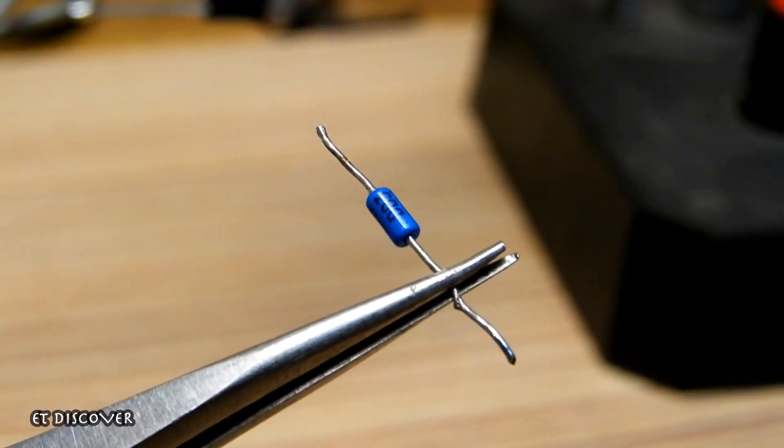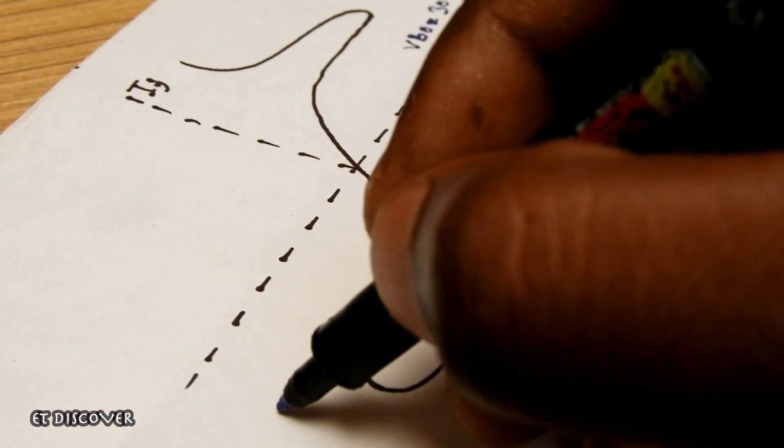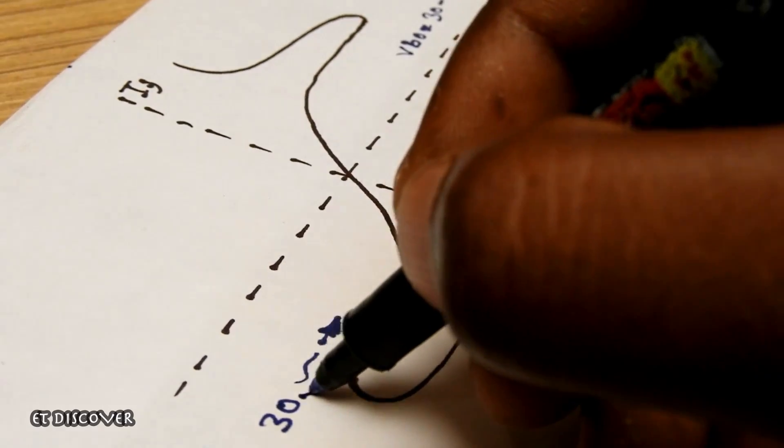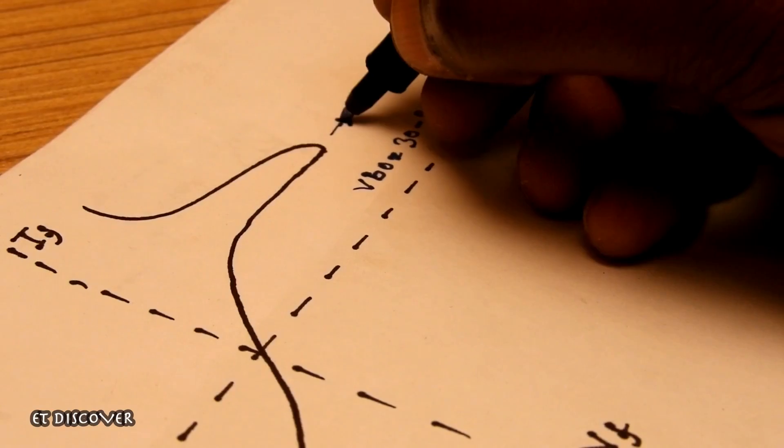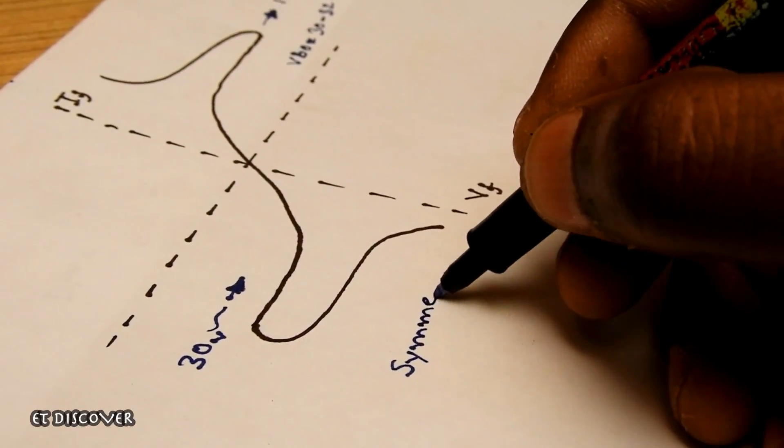Now the question is, what is DIAC? How does this DIAC work? When one end has voltage over 30V, only then the DIAC releases voltage from the other end. And in this process, there is a drop of 3V. That means symmetry voltage is 3V.